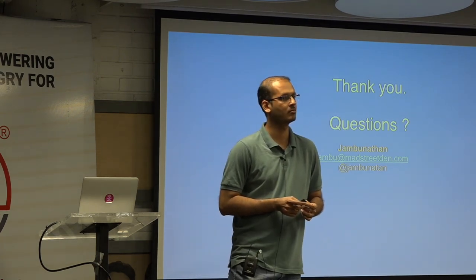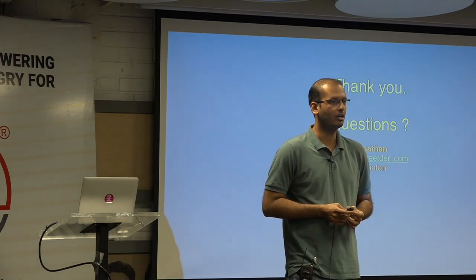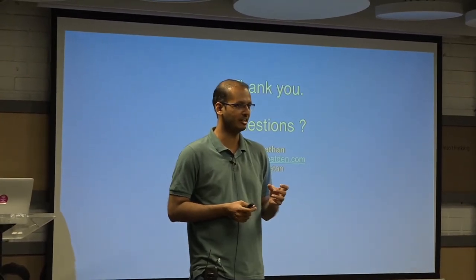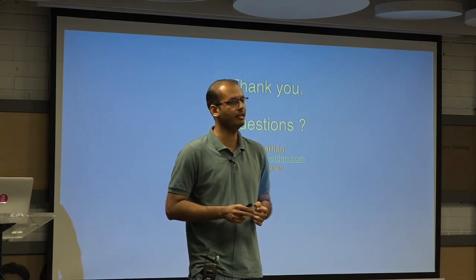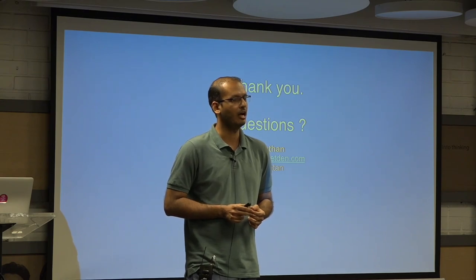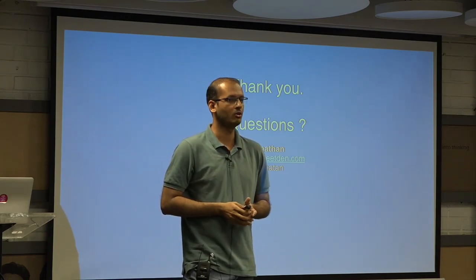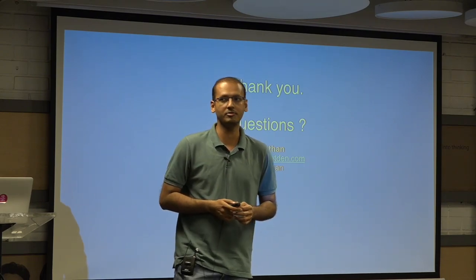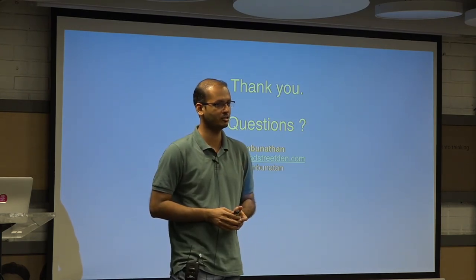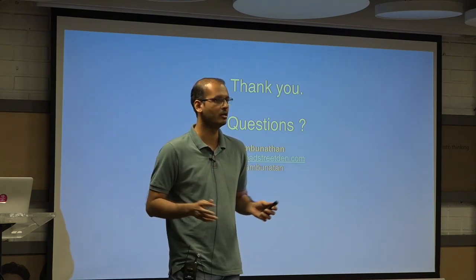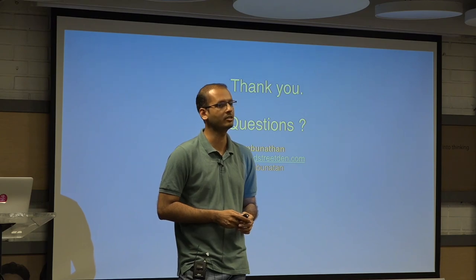Q: What about security? A: Like the previous talk, security was not the first focus when we started building. It remained at the perimeter level initially. Then we introduced golden AMIs for AWS instances. From a data point of view, we mandated encryption for all data stores from the start, HTTPS for all communications — no unencrypted communication between microservices and data stores.